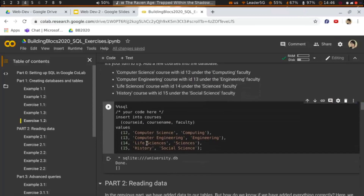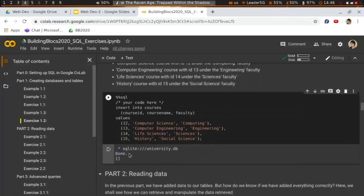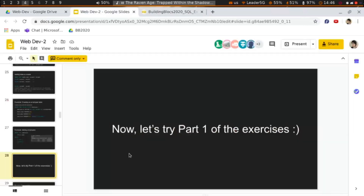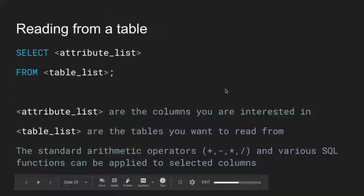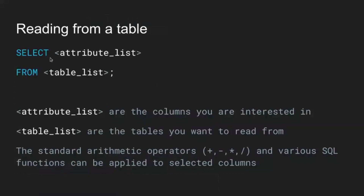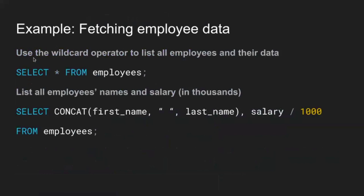After inserting data you can see it by using the SELECT statement. You specify what you want to retrieve and the table to read from. You can apply arithmetic operators and SQL functions to the selected columns. In this first example we use the wildcard operator '*' to select all employees and all their data — this is a shorthand for listing all columns, which is handy for checking that your table was created correctly.